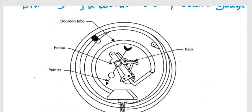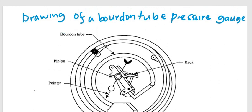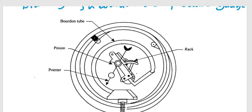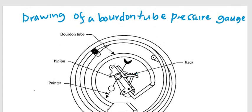This diagram shows a Bourdon tube pressure gauge. There is a pinion gear here and this is a pointer, and this is a rack. When there is a pressure to be measured, a hoop tension is set up in the rack, and the movement causes the rack to rotate with its pinion gear, causing the pointer to rotate on a scale, and therefore the pressure measurement can be taken.